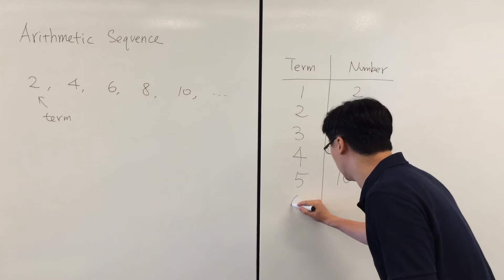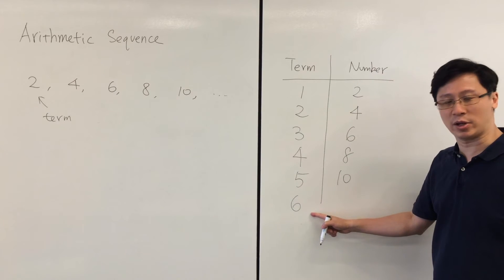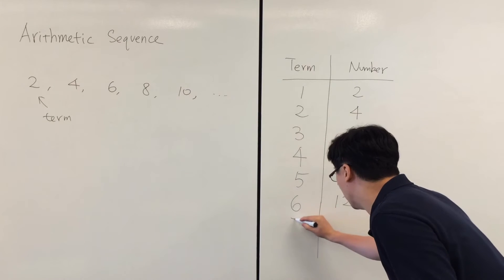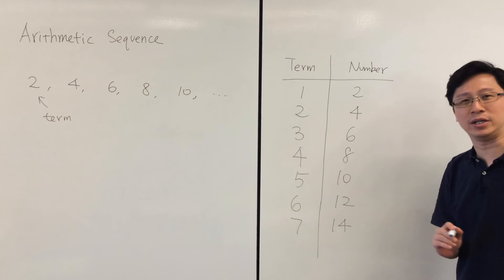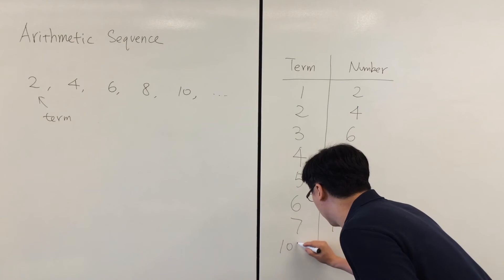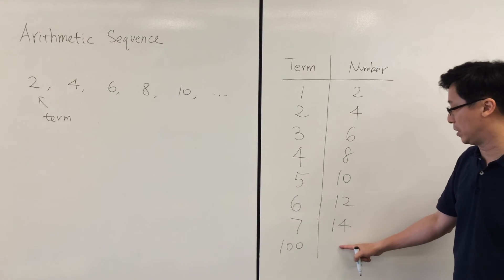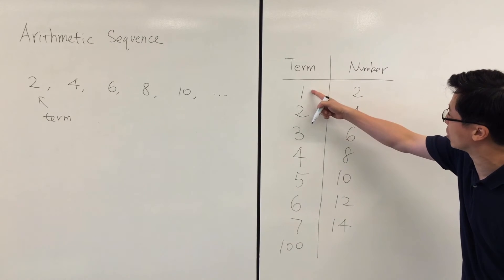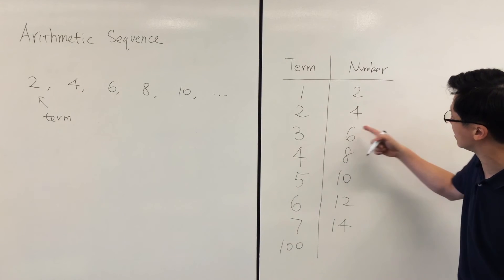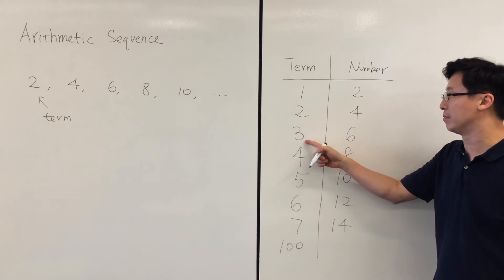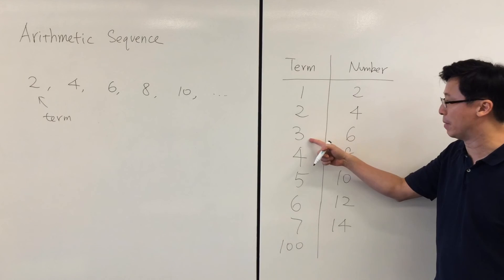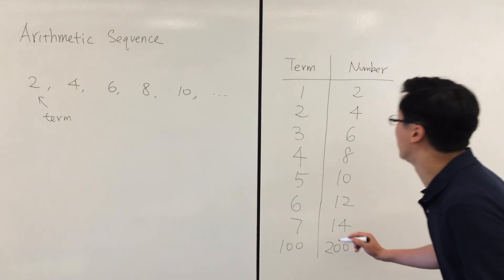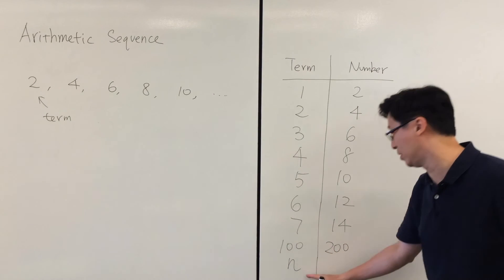Can you predict what the number is for the next term — the sixth term? This one should be 12. What about the seventh? The next one should be 14. And if we have a one-hundredth term, what should the number be? If you look at the relationship between the term and the number, you can see that the number is just the term number multiplied by two. So the 100th term would be 200, and the eighth term would be two times eight.